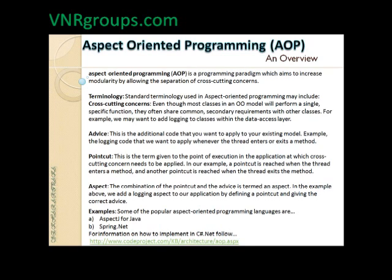Point cut is another keyword referring to the location or program execution point where you want to introduce the advice. So advice is for example logging or any helper method you want to add, and the point where you want to add it is the point cut. The aspect itself is a union of both — a combination of point cut and advice. It defines where and at what time to introduce the additional code.